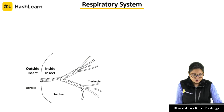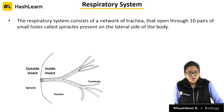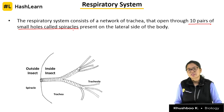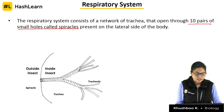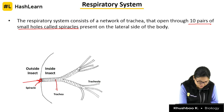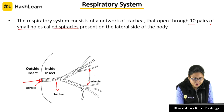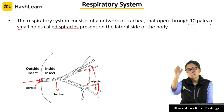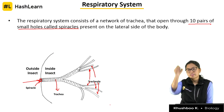The respiratory system consists of a network of trachea that opens through 10 pairs of small holes called spiracles. Spiracles are holes through which air can enter the body. Inside, the trachea divides into finer tracheoles. Air enters through the spiracles, goes through the tracheal system, and connects to the entire body, delivering oxygen to all parts.